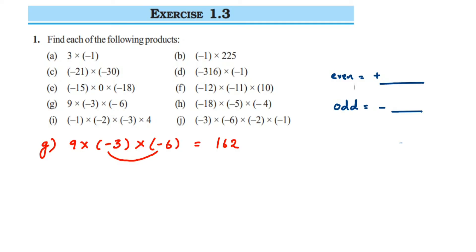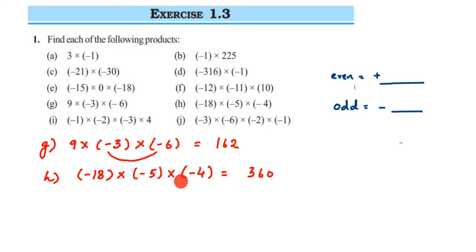Problem H: minus 18 multiplied by minus 5 multiplied by minus 4. Multiply the numbers: 18 into 5 into 4 gives 360. Now let's check the sign — we have three negative signs: minus, minus, minus. 3 is an odd number, so the final answer is going to have a negative sign: minus 360. Or, working step by step: minus into minus is plus, then plus into minus is minus. So the final answer is minus 360.